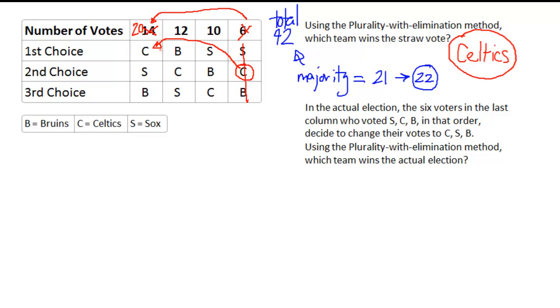But watch what happens if we rerun this plurality with elimination method. When we look at the plurality with elimination method again, you'll see now that the Celtics get 20 first place votes, the Bruins 12 and the Sox 10. That means this time we have to eliminate the Sox because they have the lowest number. And none of them have a majority of 22 yet.